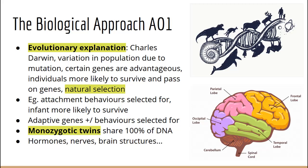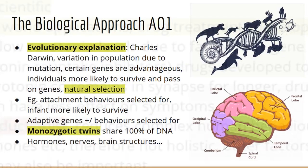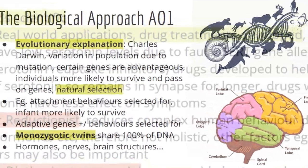To determine the involvement of genetic factors, we use twin studies. We compare the concordance rate — the presence of the same trait in both members of a pair of twins — of monozygotic twins, identical twins who share 100% of their DNA, to the concordance rate of dizygotic twins, who share 50% of their genetic material.